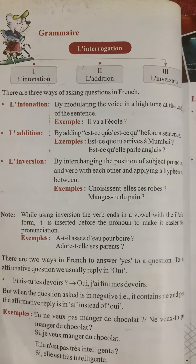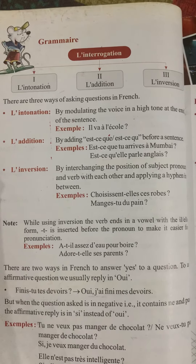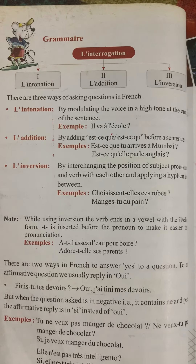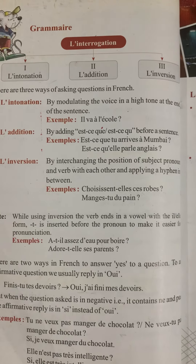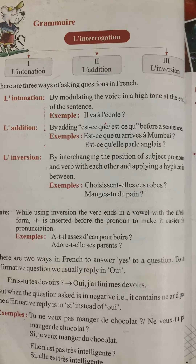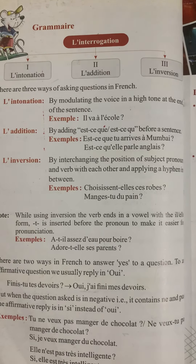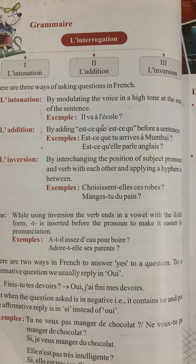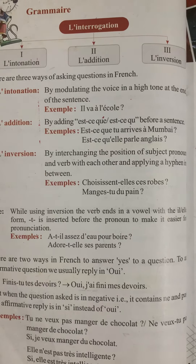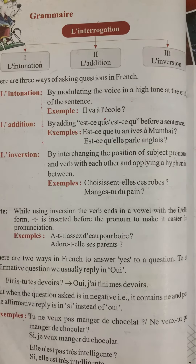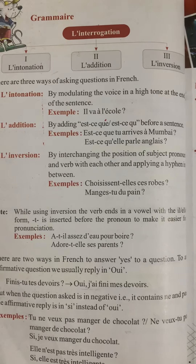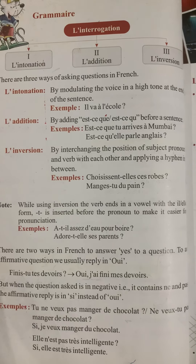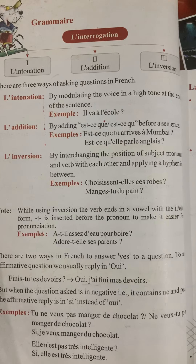Third form: inversion — by interchanging the position of the subject pronoun and the verb with each other and applying a hyphen in between. The verb will be first, then subject, then object. The structure for this is verb + hyphen + subject + object. We have to put a hyphen between the verb and subject.